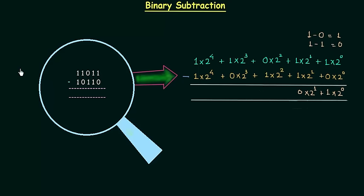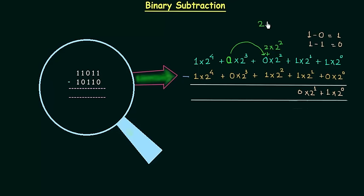0 minus 1 will give us minus 1, so we have to take borrow from the next bit. After taking borrow, this position gets 1 multiplied by 2 raised to power 3, and we are left with 0 multiplied by 2 raised to power 3. Since this position is for 2 raised to power 2, we write 1 multiplied by 2 raised to power 3 as 2 multiplied by 2 raised to power 2. Now we add 2 and 0 to get 2, and then subtract 1, which gives us 1. So we have 1 multiplied by 2 raised to power 2.